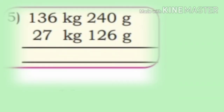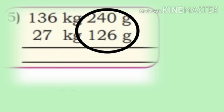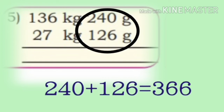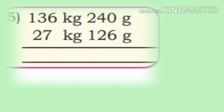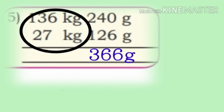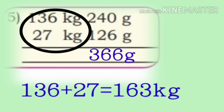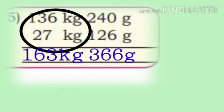Fifth one: 136 kg 240 grams plus 27 kg 126 grams. First add grams: 240 plus 126 is 366 grams. Now add kilograms: 136 plus 27 is 163 kg.